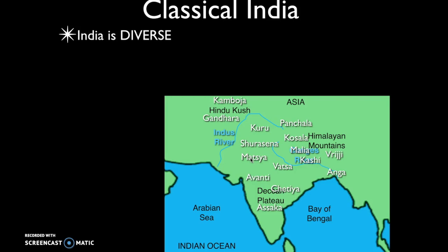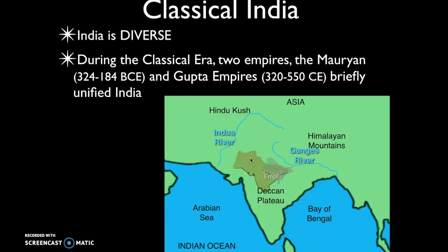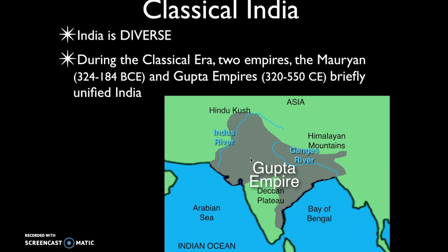There have been a couple of exceptions to India's political decentralization. During the classical age we had the Mauryan Empire from 324 to 184 BCE, and then the Gupta Empire from 320 to 550 CE — both briefly unified India, though this didn't last long. What provides India lasting stability is the caste system and the Hindu faith, with concepts of dharma, karma, and reincarnation providing order and stability for Indian society.